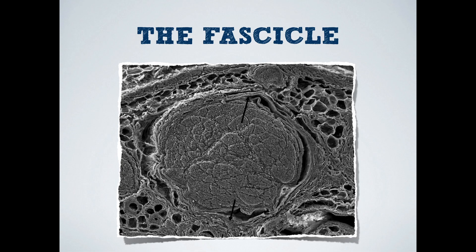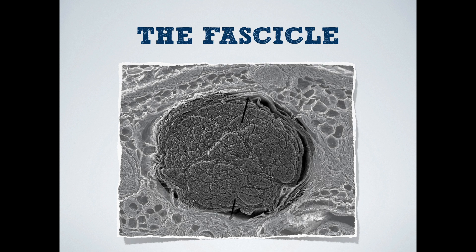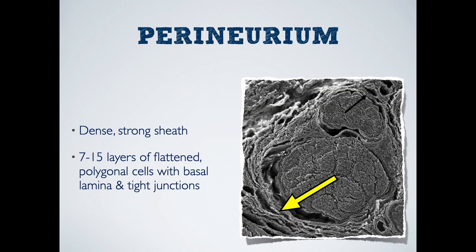Now if we take a collection of nerve fibers and put them together in one packet like a bundle of sticks, we now have a fascicle. The word fascicle does in fact take its meaning from the Latin for bundle. The fascicle is the physiologic unit of the peripheral nerve system. The fascicle is surrounded by a structure called the perineurium — a multi-layer sheath of flattened cells that have a basal lamina and tight junctions, about 7 to 15 layers thick.